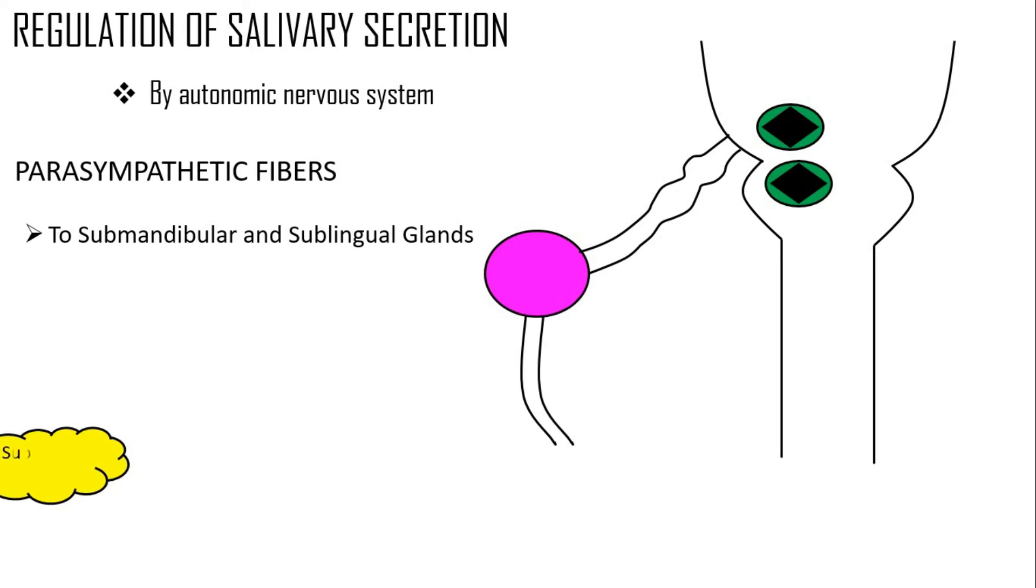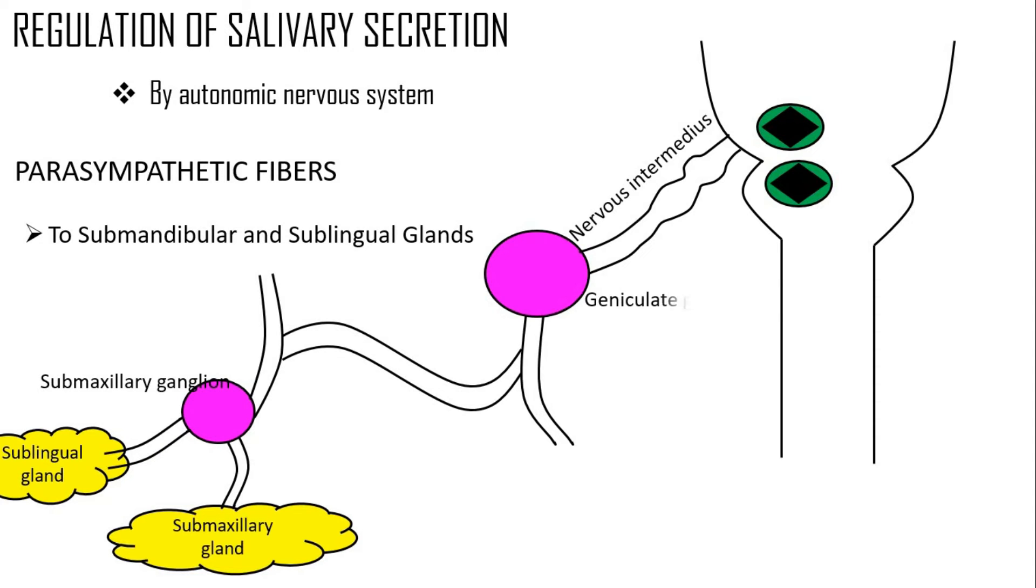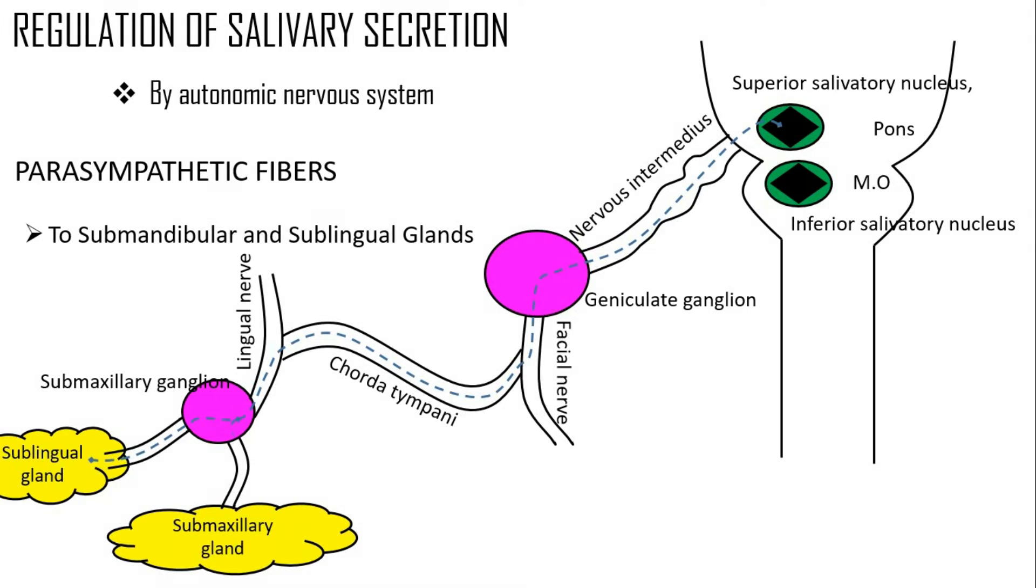Next, let's discuss the regulation of salivary secretions. Salivary secretion is regulated by the autonomic nervous system, that is, by both parasympathetic and sympathetic divisions of the autonomic nervous system. Let's look at the parasympathetic fibers. In the case of parasympathetic fibers, we have two different mechanisms: one for the sublingual and submandibular glands, and the other for the parotid gland. The parasympathetic preganglionic fibers arise from the superior salivatory nucleus situated in the inferior portion of the pons. It then passes through the nervus intermedius of Wrisberg, then to the geniculate ganglion, and through the chorda tympani of the facial nerve, then lingual branches of the trigeminal nerve, and then it finally reaches the submaxillary ganglion.